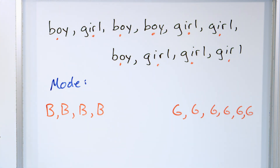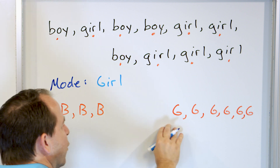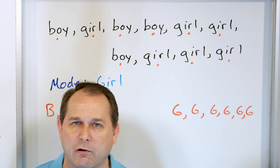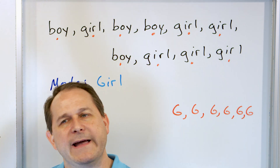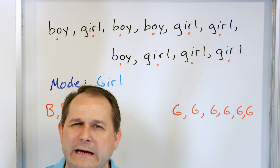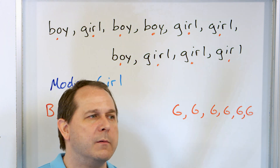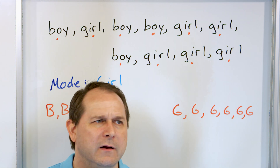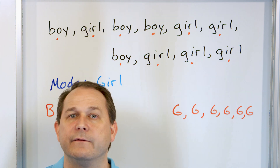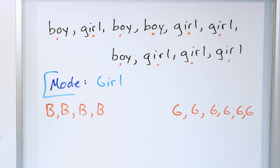So we use the mode mostly for non-numerical data. In the past we have calculated the mode for numbers also — we can do it, but usually we don't. We use the mean or the median almost always. The mode is mostly used when you have eye color, hair color, boy/girl, what kind of car do you like — things you can't really calculate with. You can still find the mode by figuring out what is the most common value in the data set. When it's non-numerical, we use the mode.